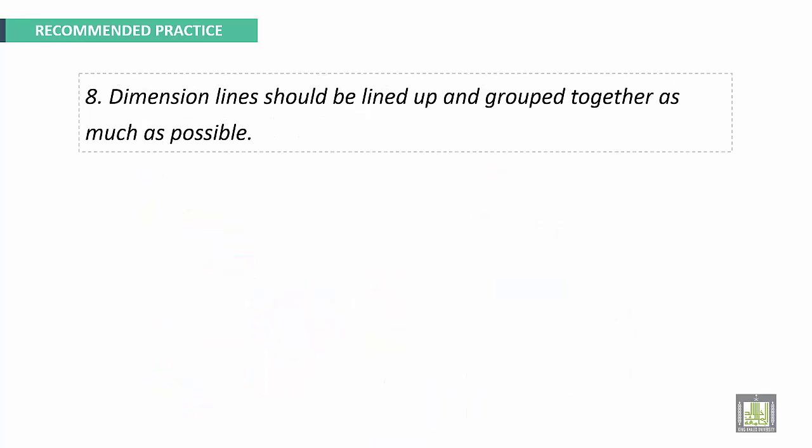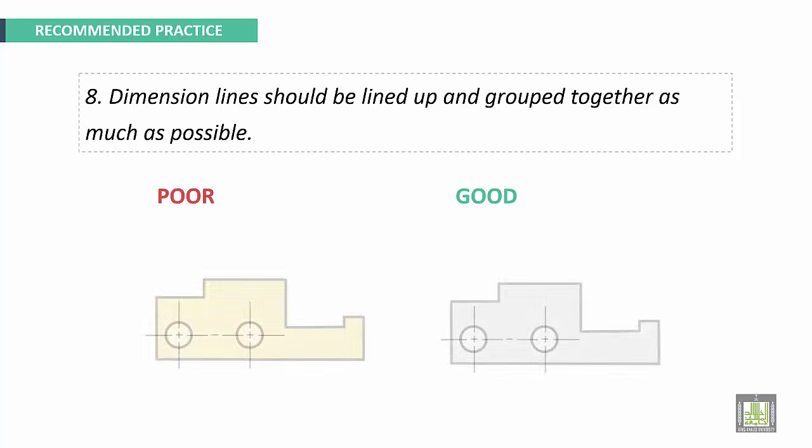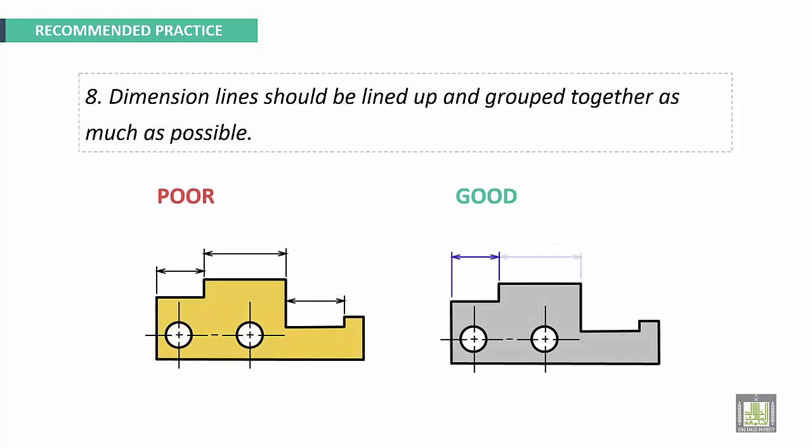Next recommendation: dimension lines should be lined up and grouped together as much as possible. This is an example. This is not good to make dimension here, to make dimension here, and up and down. It's better to group all dimensions together.